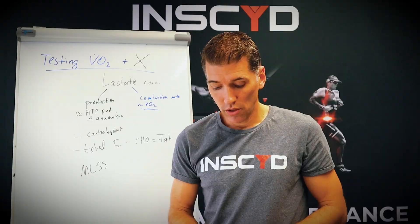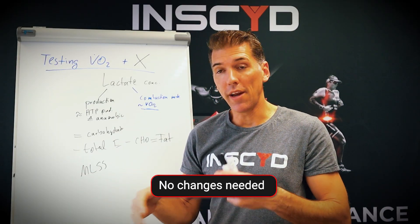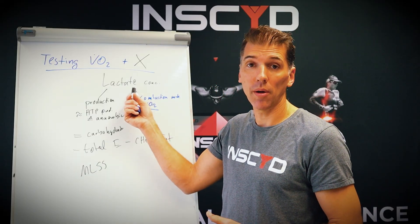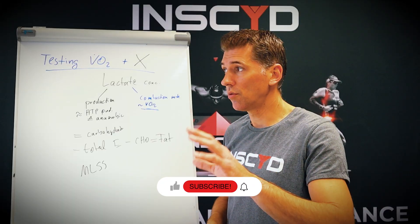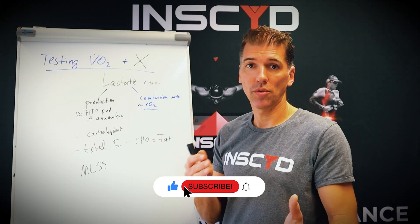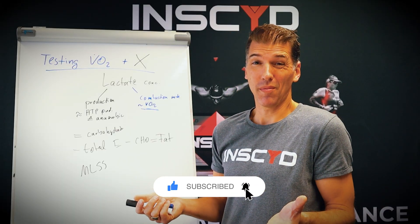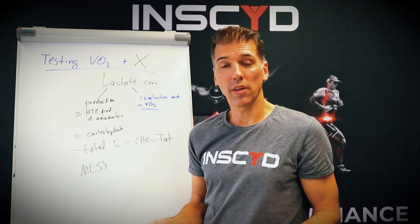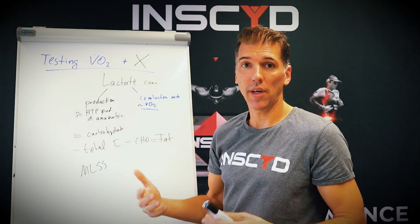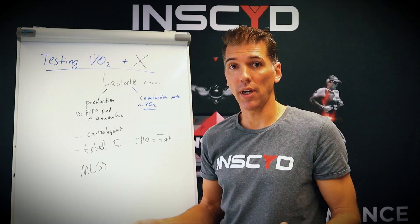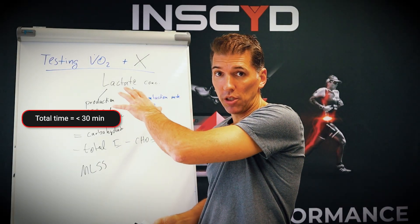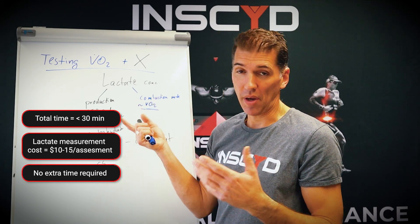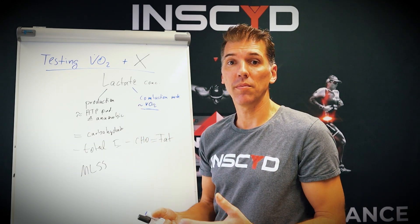And the good thing is, you don't need to change anything in your workflow. Just do a normal graded incremental exercise test — you can even use the warm-up. Do three or four steps, three to five minutes long each. That's about 15 minutes including the warm-up. Measure lactate concentration at sub-maximal intensities, then do your normal ramp test or whatever you do for VO2 max. Total time: less than 30 minutes. Lactate measurement cost: 10 to 15 dollars per assessment — no additional time needed, just about 10 to 15 dollars additional investment if you use lactate strips.